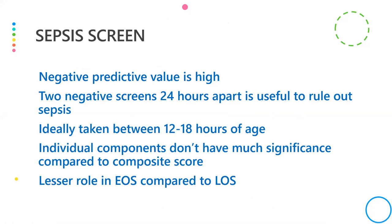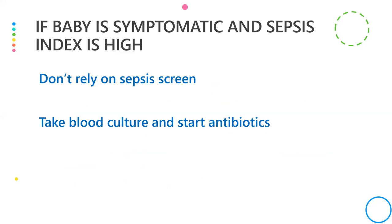To sum up: sepsis screens have good negative predictive value. If two sepsis screens taken 24 hours apart are negative, they can be used to rule out sepsis. The first screen should be done at 12–18 hours of age — taking it too early means neutrophil response may be inadequate. Individual screen components have little meaning; use the composite score. If the baby is symptomatic and sepsis is strongly suspected, do not rely on the screen — take a blood culture and start antibiotics.